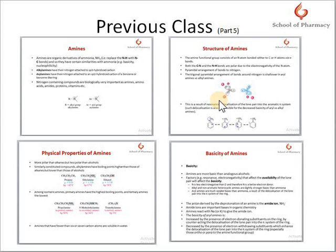In medicinal chemistry and pharmaceutical sciences, these amines have a very important role. Morphine, which is an analgesic, contains the amine group. Novocaine, which is an anesthetic, also contains the amine group. They are also used in pest control, the tanning of leather, and in the manufacturing of man-made dyes.